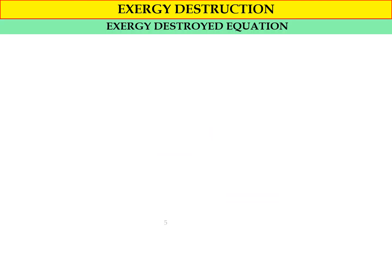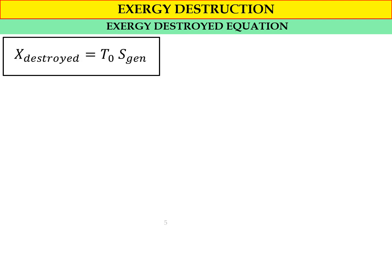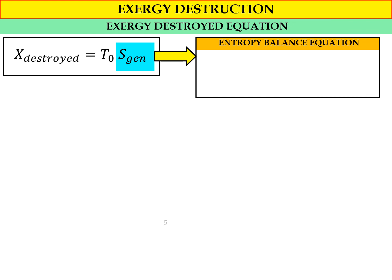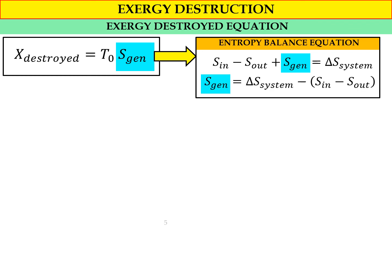Now we look into the exergy destroyed equation in detail. We know exergy destroyed equals T_not times entropy generated. From the entropy balance equation: entropy in minus entropy out plus entropy generated equals the change in entropy of the system. Rearranging, entropy generated equals the change in system entropy minus the bracket of entropy in minus entropy out.